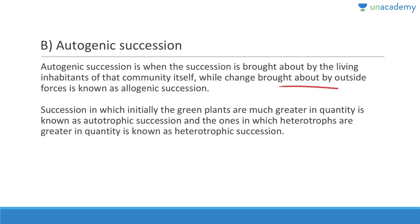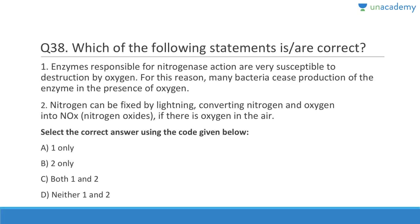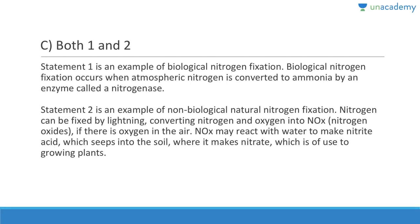Question thirty-eight: Enzymes responsible for nitrogenase action are very susceptible to destruction by oxygen — for this reason many bacteria cease production of the enzyme in the presence of oxygen. Nitrogen can also be fixed by lightning, converting nitrogen and oxygen into NOx. Both statements are absolutely correct. Statement one is an example of biological nitrogen fixation, occurring when atmospheric nitrogen is converted to ammonia by an enzyme called nitrogenase. Statement two is an example of non-biological nitrogen fixation via lightning.